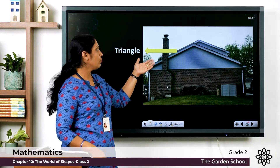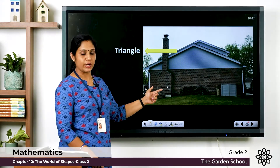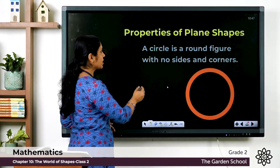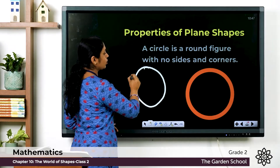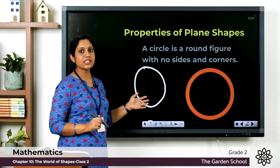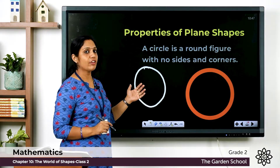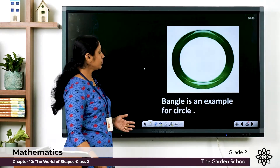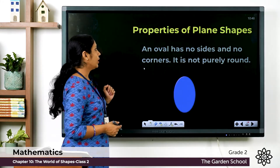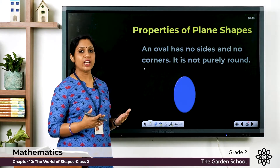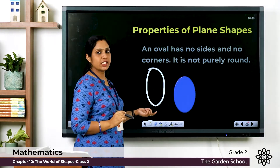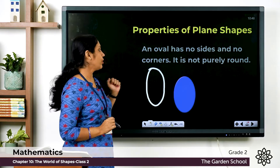You can see that the roof of a house is triangle in shape. Now let's learn about the circle. A circle is a round figure with no sides and no corners. A bangle is an example of a circle. An oval is also drawn similarly — there is no side or corner for an oval. An egg is an example of an oval shape.